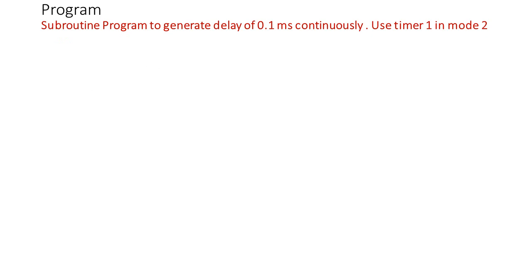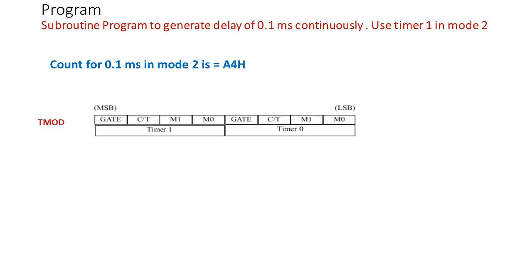Now we will write a subroutine program to continuously generate a delay of 0.1 milliseconds using Timer 1 in Mode 2. We have computed the count for 0.1 ms delay in Mode 2 as A4H. First we initialize the TMOD register. This is the format of the TMOD register and we are going to use Timer 1.